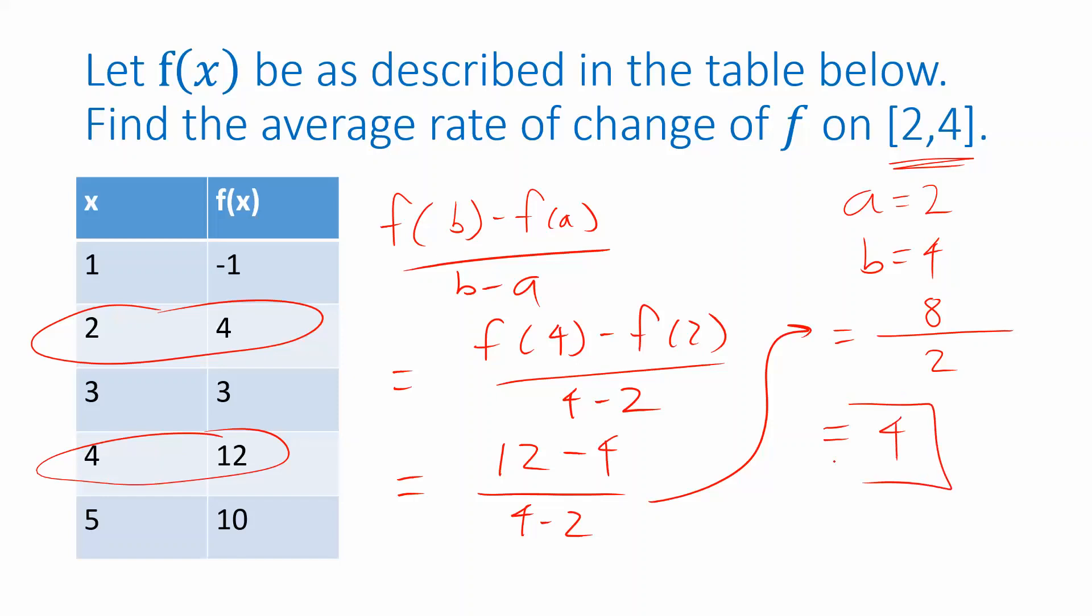So in this case, the average rate of change is four. So you can think of that as the slope of the line that would connect these two points on the graph of f.